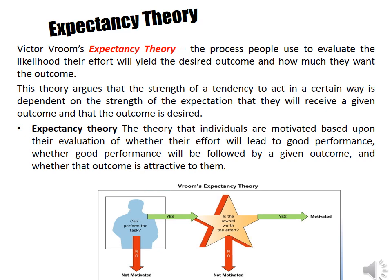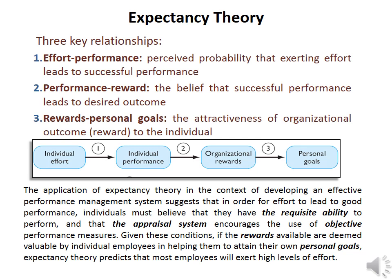Expectancy theory holds that people tend to evaluate the likelihood that their effort will result in the desired outcome, and whether this outcome is attractive and preferable to them. Expectancy theory talks about three main relationships: first, the effort-performance relationship; second, the performance-reward relationship; and third, the rewards-personal goals relationship.